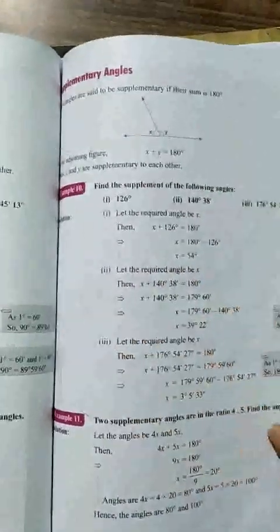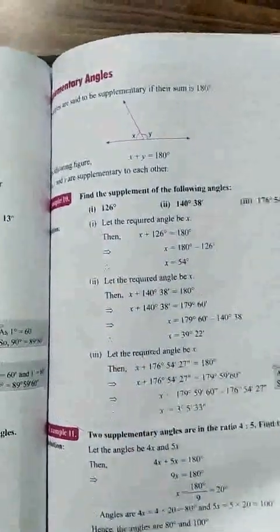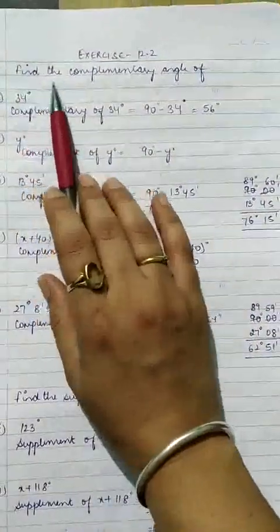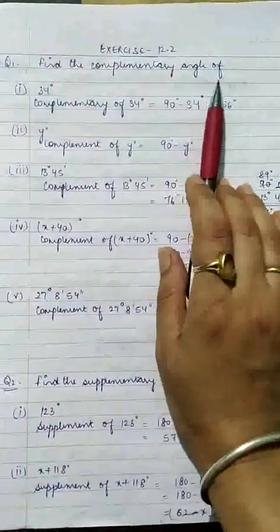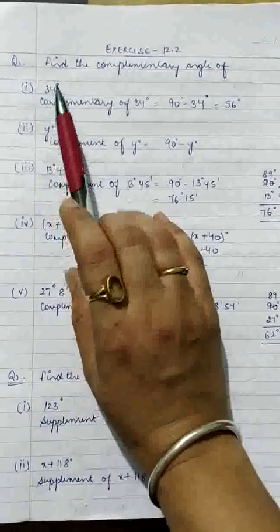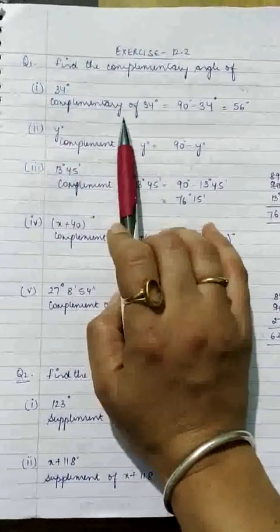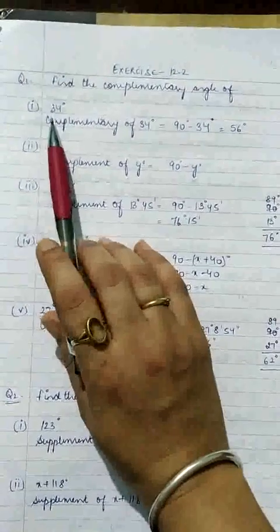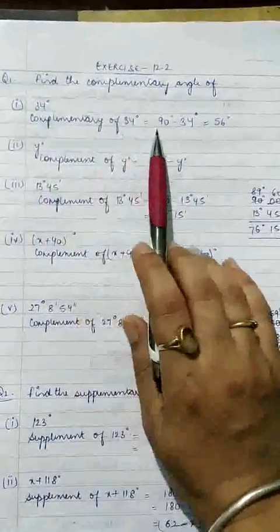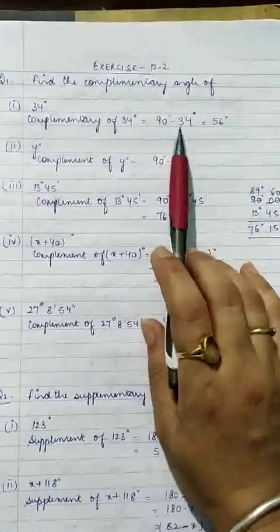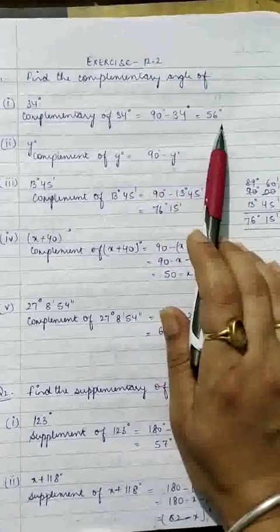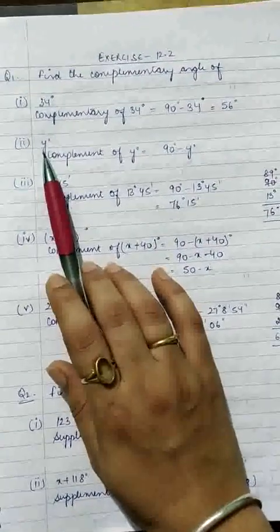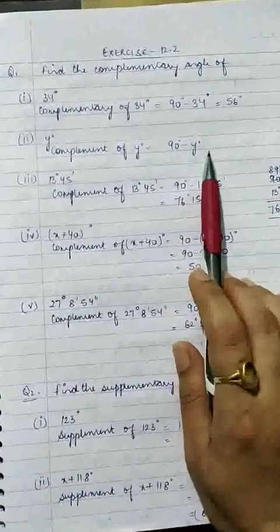Now, Exercise 12.2. Find the complementary angle of 34 degrees. To calculate the complementary angle of any given angle, we subtract the given angle from 90. So 90 minus 34 is equal to 56. Complementary angle of Y is 90 minus Y.